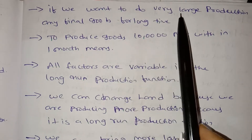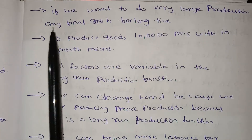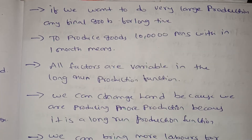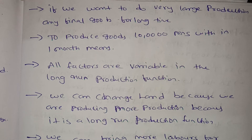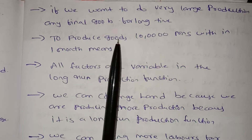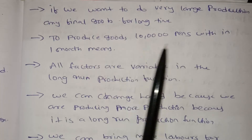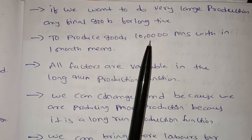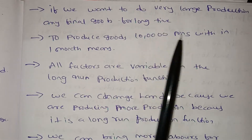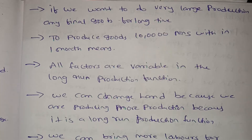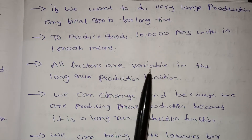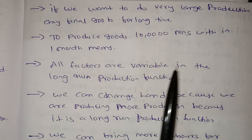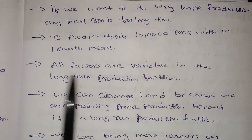If we want to do very large production of final goods for a long time — for example, producing 1 lakh goods in one month — that is long-run production. All factors are variable in the long-run production function.